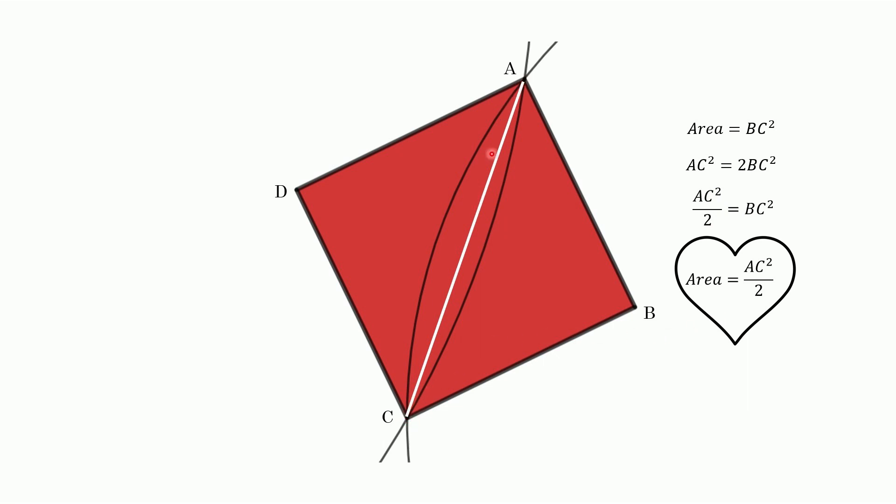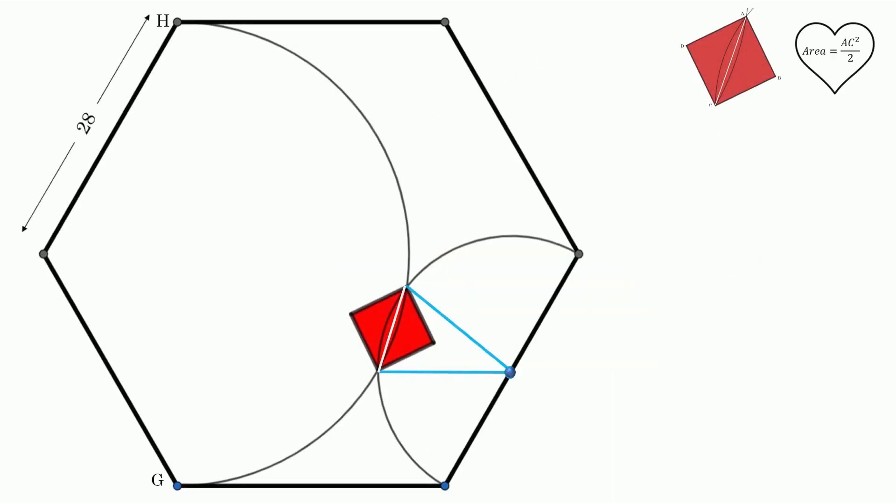So if I can find this diagonal, square it divided by 2, I've got the area. So I'm going to take my little formula I found. I'm going to tuck it up in the corner over there, put a little heart around it because we love math. Also, take a little picture of what it is we're trying to find just to keep us on the straight and narrow here. And let's go ahead and dive in.